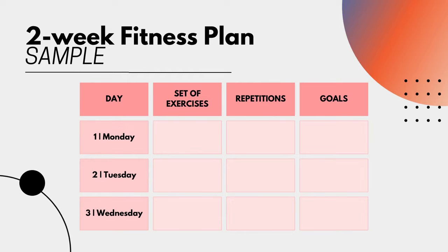This is a sample of a two-week fitness plan. As you can see, there are four columns. In the first column, we have the day or the date — what day you started. So, for example, we have day one or Monday, two for Tuesday, three for Wednesday.